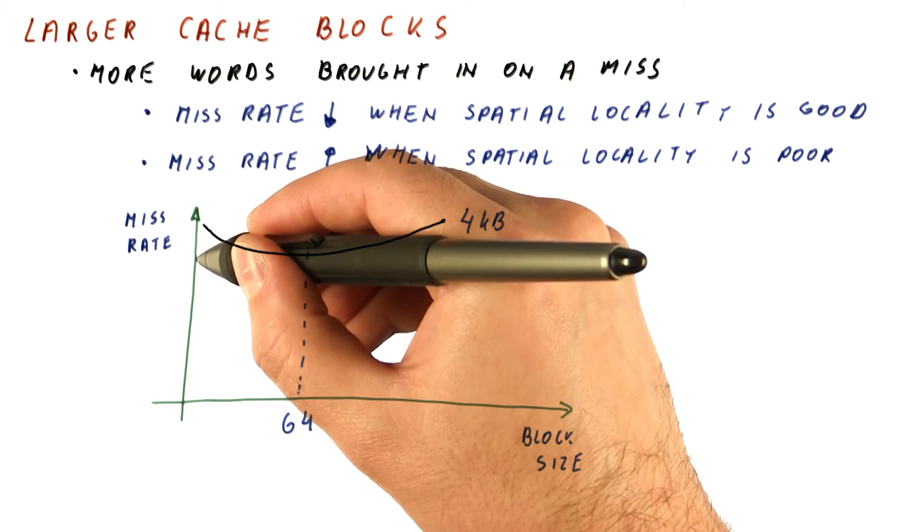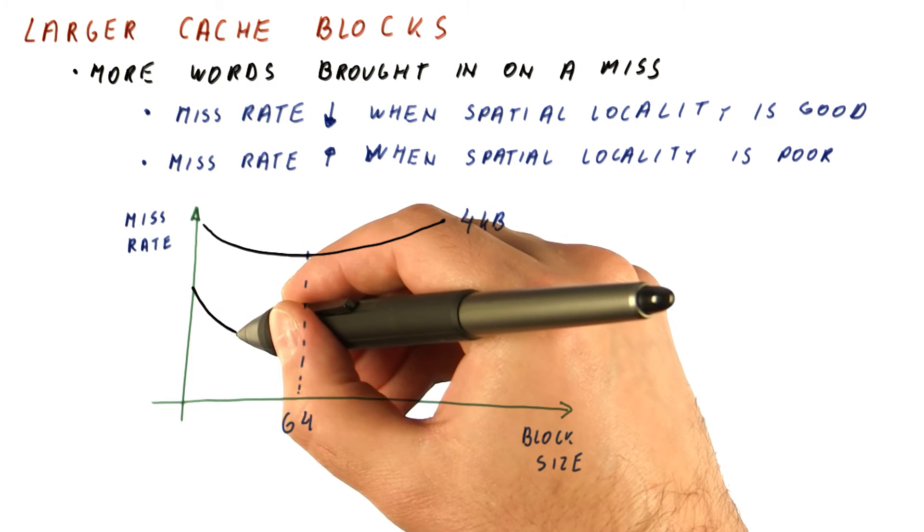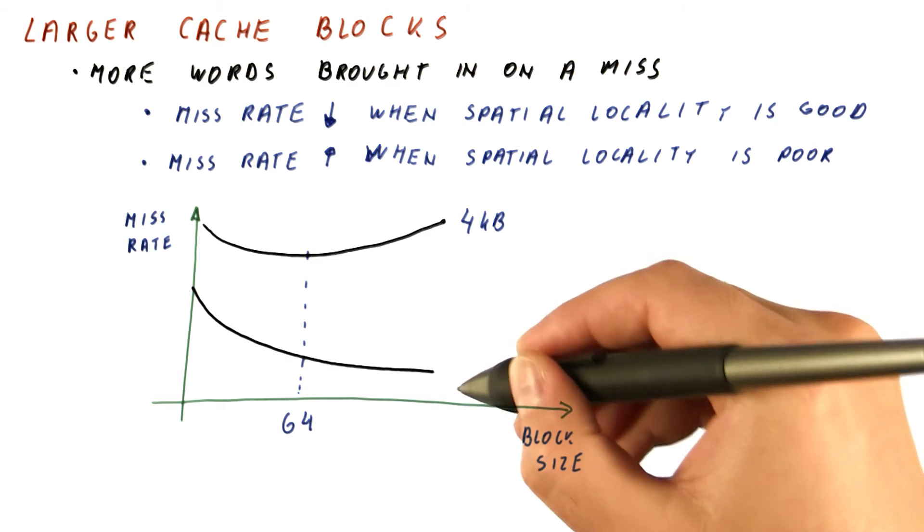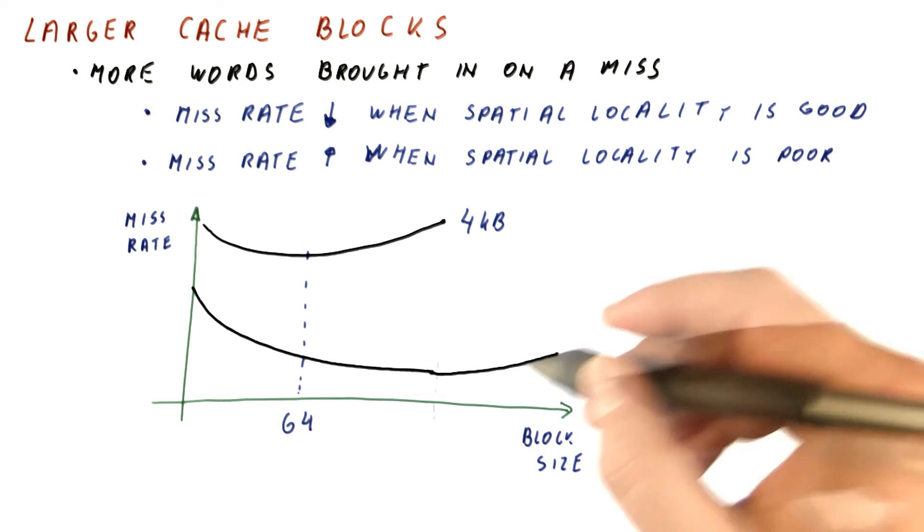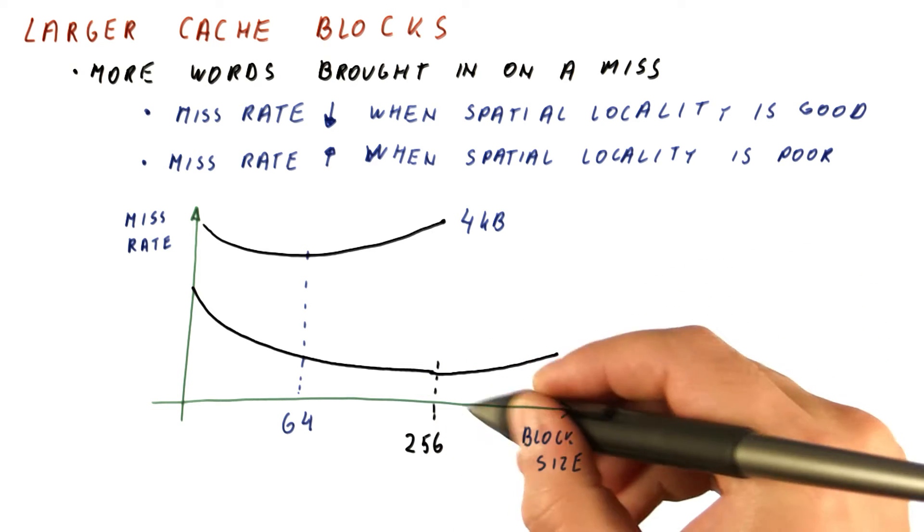Interestingly, for larger caches, we will start out with a lower miss rate to begin with, and it will continue to drop up to larger block sizes. Eventually it's going to start to increase, but here we might be looking at, for example, a 256-byte block size.